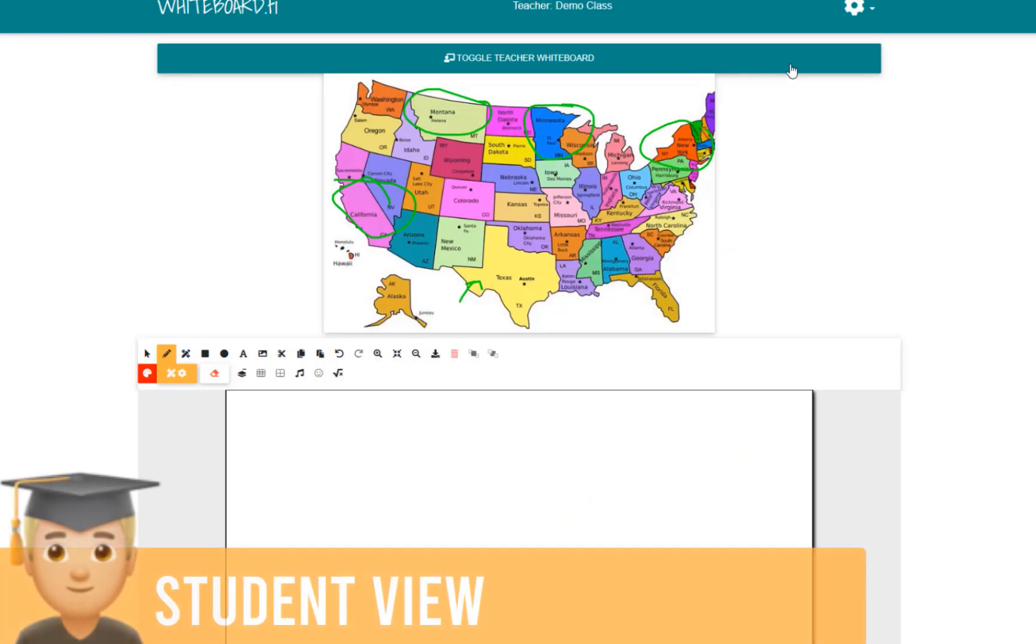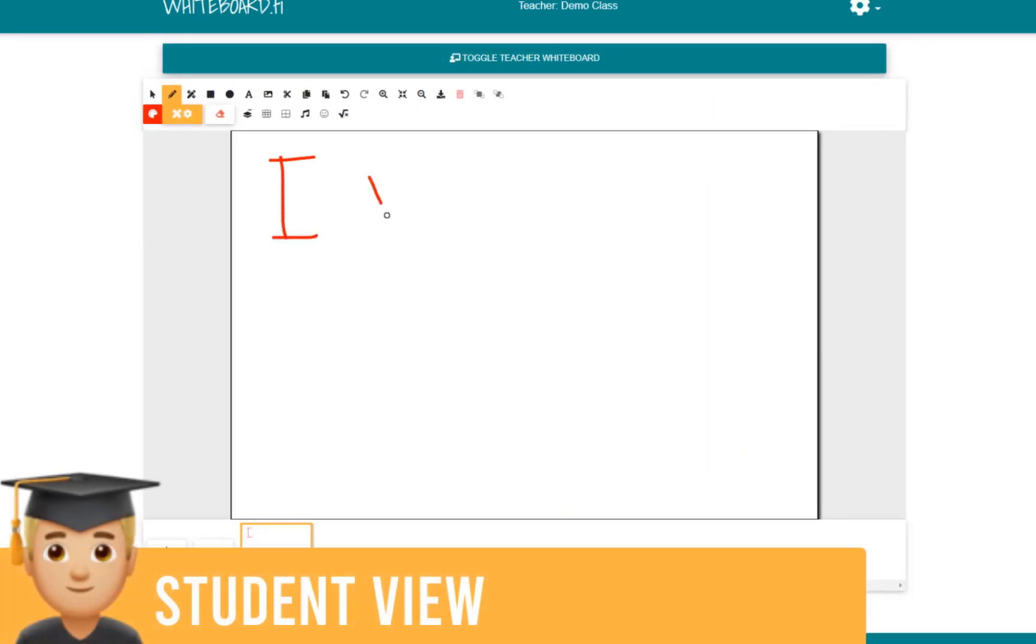You can see the teacher view at the top. This is what the student view looks like at the bottom. You'll notice that students can toggle between watching the teacher's whiteboard and writing on their own whiteboard.